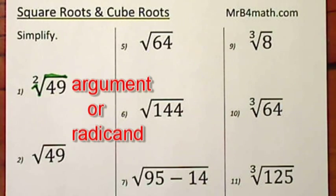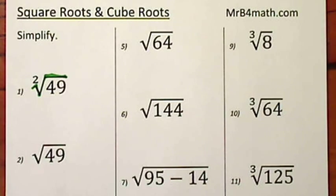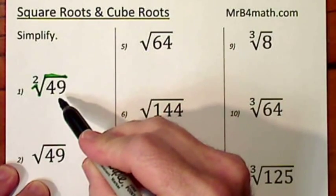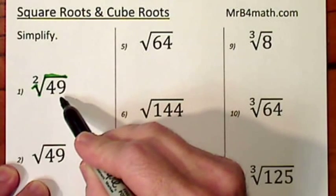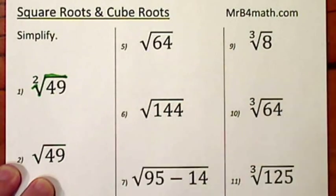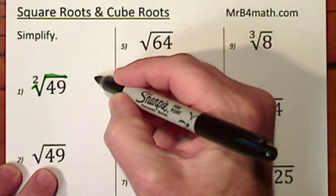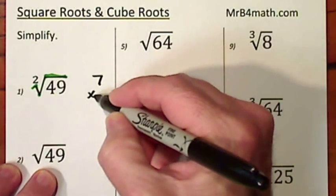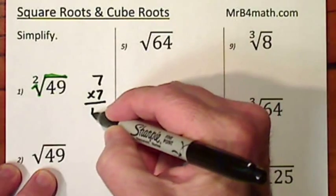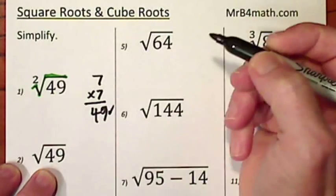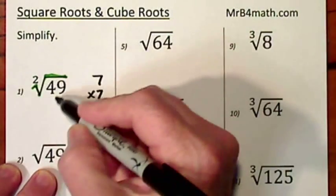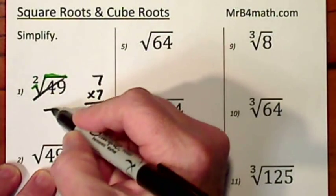The idea of a square root is you think of what number times itself will give you 49. So you just run through the numbers in your mind, and in this case, 7 times 7 would give you 49. So the square root of 49 is 7.